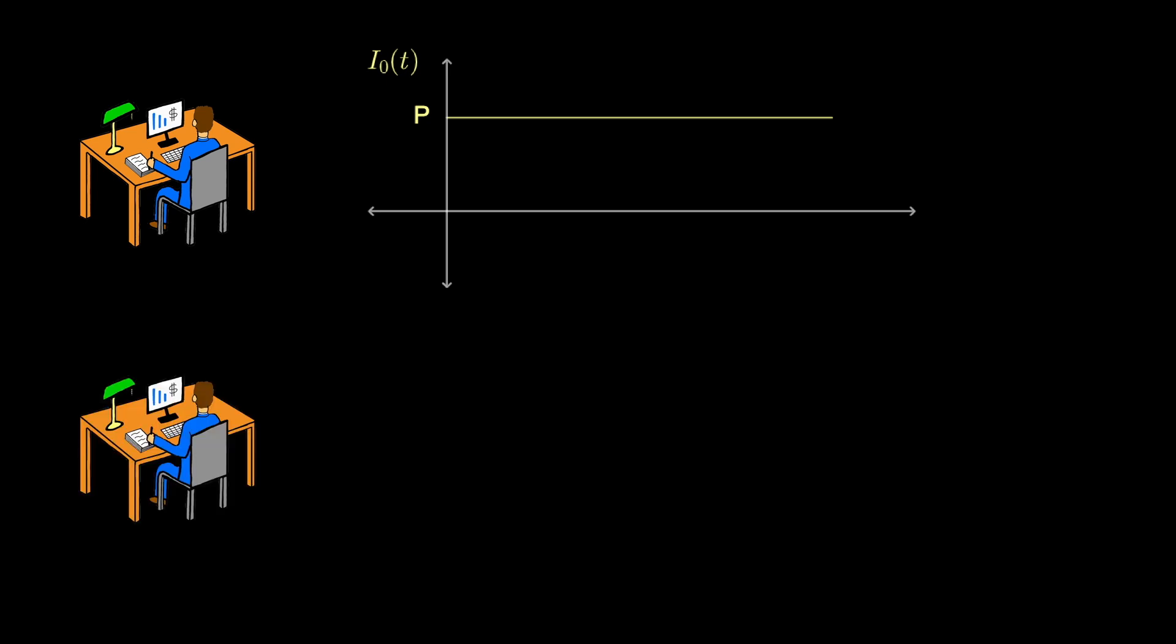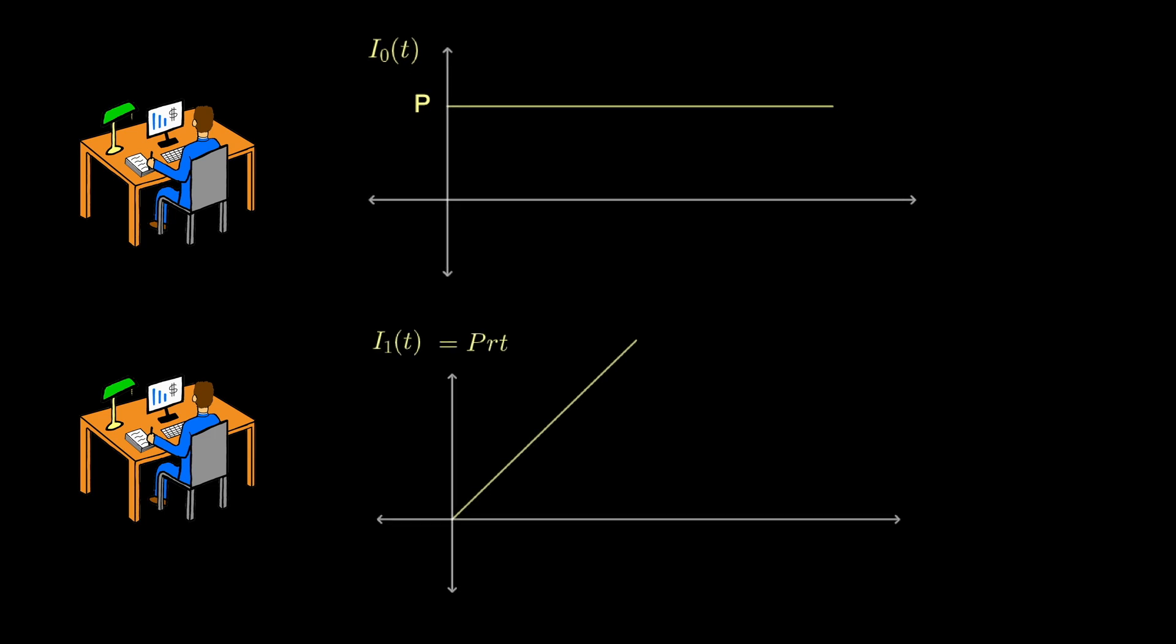But the first interest desk keeps track of the simple interest earned on this principal. That's still easy. All the banker has to do is calculate I equals PRT. This amount grows linearly.